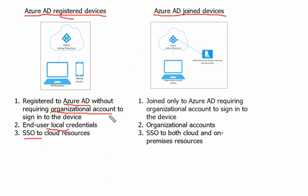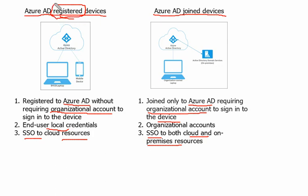Single sign-on to cloud resources is also possible with registered devices. Azure AD joined devices are joined only to Azure Active Directory and require an organizational account to sign in. SSO to both cloud and on-premise resources is supported. In simple terms, registered devices are personal devices of employees, while joined devices are the organization's devices with their own account to log in.